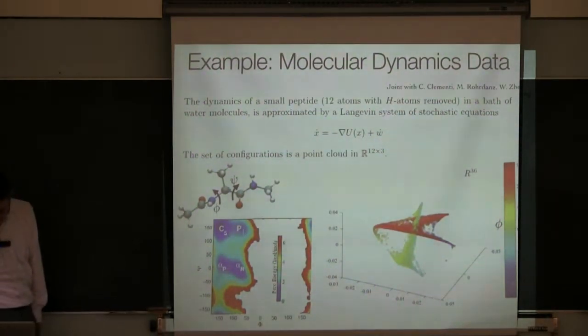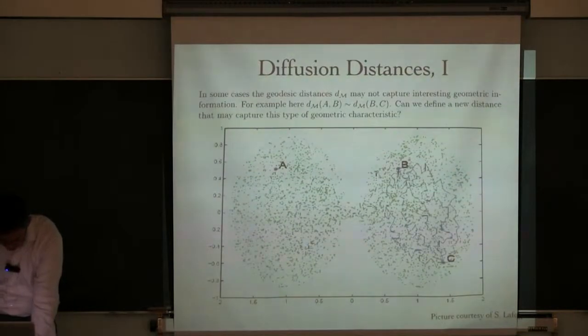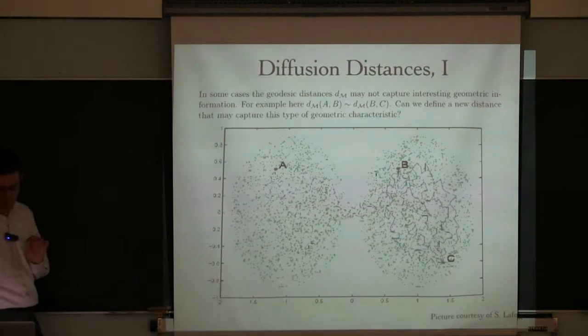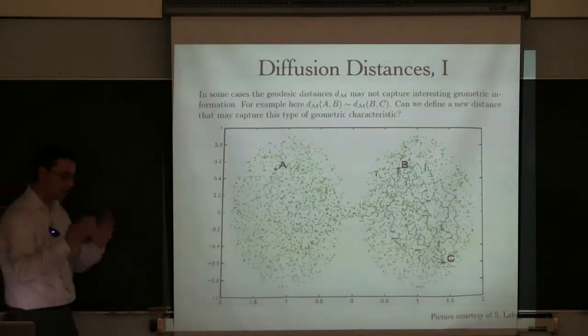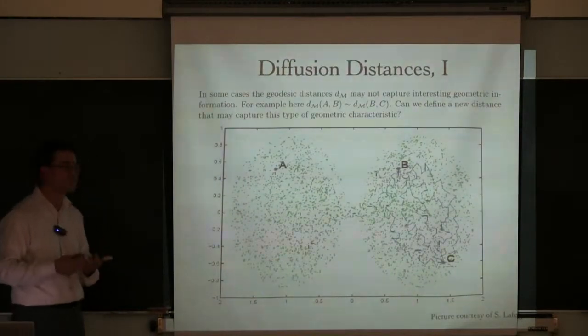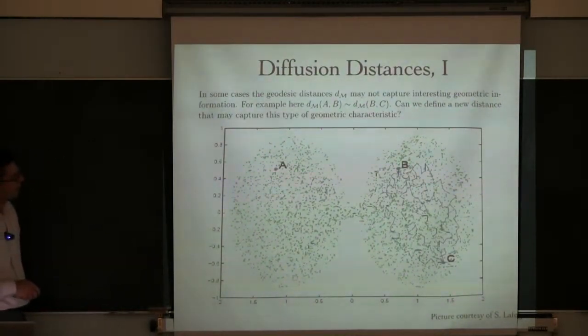So let me just give you one piece of intuition about what this map is doing. Because this map looks sort of weird. You construct this graph, you can put the eigenvectors of the random walk and use them to embed. What is this map really doing? Well, suppose our dataset had a shape like this, where there are two chunks, two clusters.